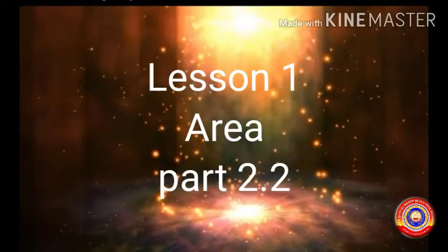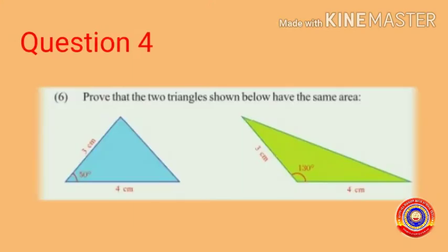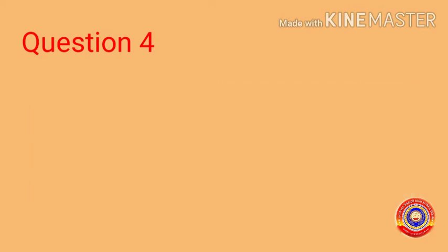Children, let's continue our exercise. Question number 4: Prove that the two triangles shown below have the same area. We have to prove that the given triangles have the same area. Let's start.